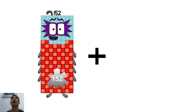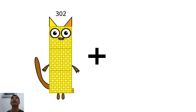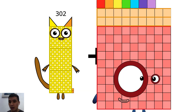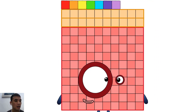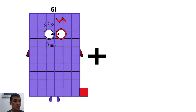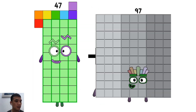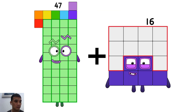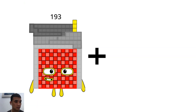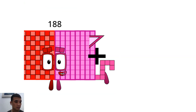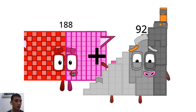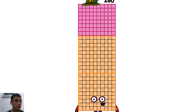302 plus 127 equals 114. 47 plus 16 equals 63. 188 plus 92 equals 280. You're a deity.